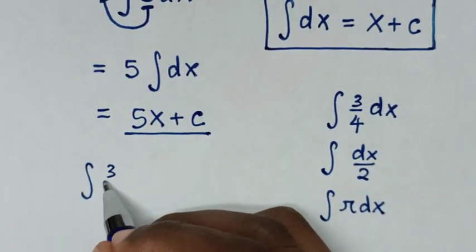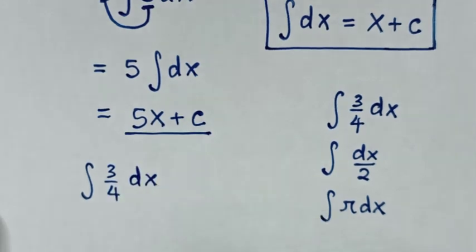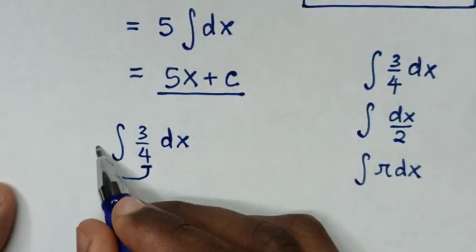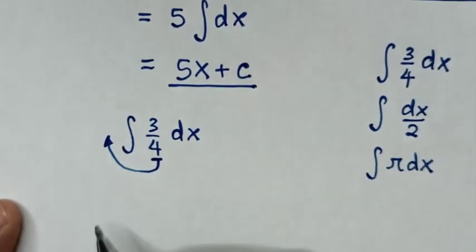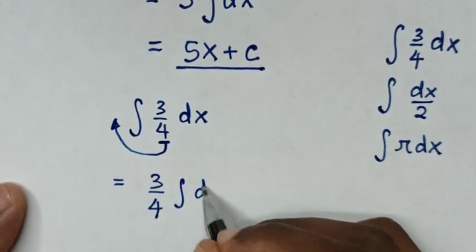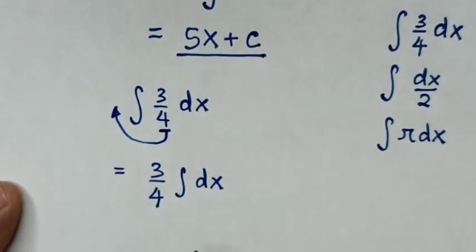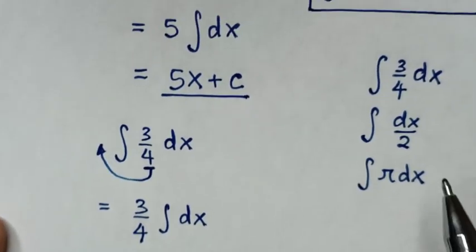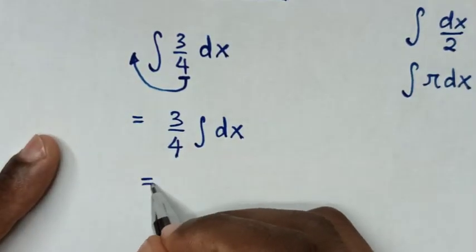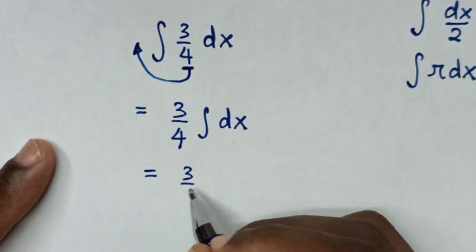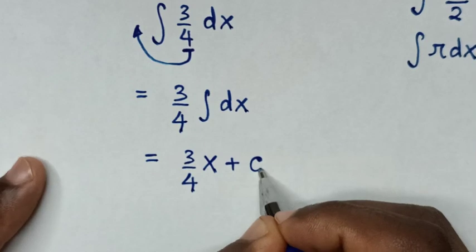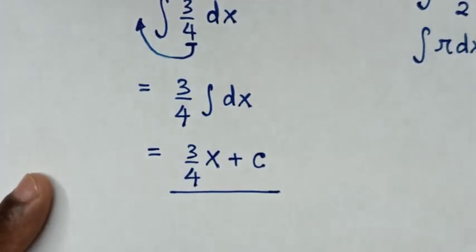Integral of 3 over 4 dx. The fraction 3 over 4 is a constant, so it will move outside of the integral. It will be equal to 3 over 4 times the integral of dx, which is x plus C. So the final answer for this integral is 3 over 4 times x plus C.